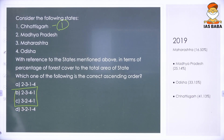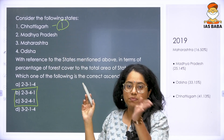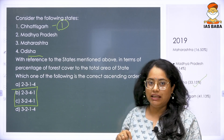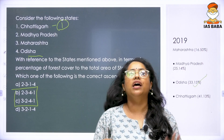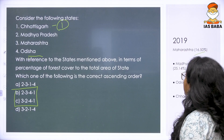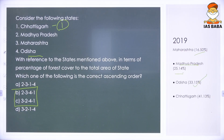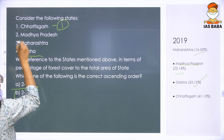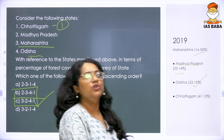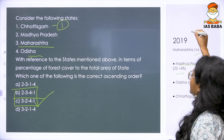Just before Chhattisgarh, you have Odisha — the forest cover of Odisha is almost 33%. Now you have to compare Maharashtra and Madhya Pradesh. Maharashtra only has 16.4% and Madhya Pradesh has 25%. So you are looking at an answer which has Maharashtra at the lowest, then Madhya Pradesh, then Odisha, then Chhattisgarh. The answer to the question is 3, 2, 4, 1 — so the answer to this 2019 question is C.